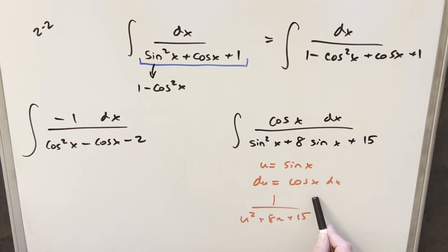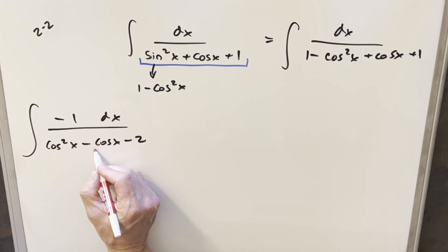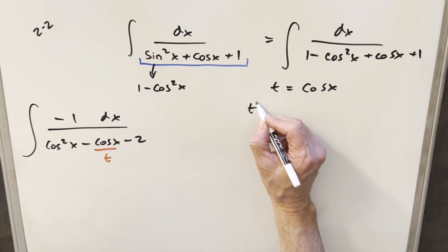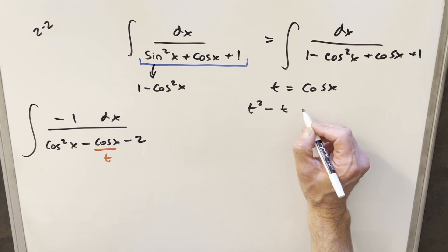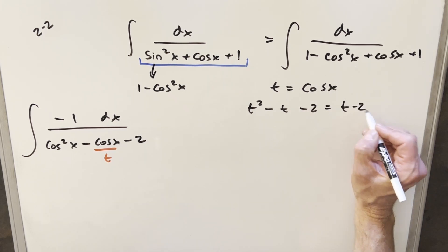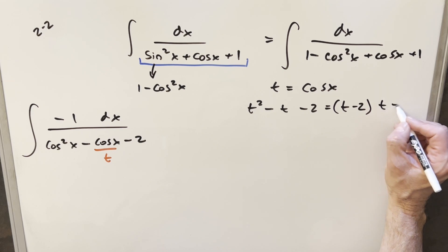Now at this point, the u substitution is not really going to work, but the factoring can work. Let's get a little more space. I think what I'm going to do is just put the integral aside for a second and do a substitution so we can do algebra. I'm just going to set my t equal to cosine of x so that we can factor this. We have t squared minus t minus 2, but this is going to factor as t minus 2 times t plus 1.